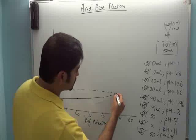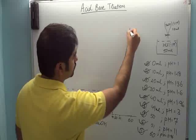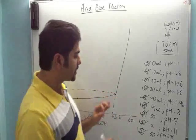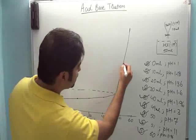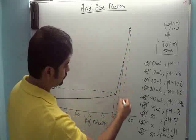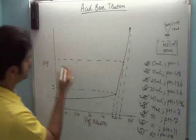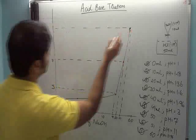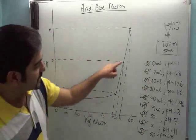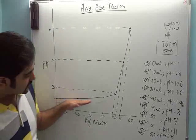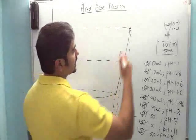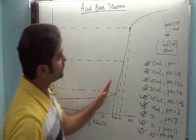Toh agar mein inko jod ke curve banao — yeh ek dam se badha. Thik hai, agar aap isko pencil ya pen leke bade dhyan se banao ge, toh it will look excellent. 49 pe pH 3 hai, 50 pe it becomes 7, and 51 pe it becomes 11. Aur 11 ke baad, jab aap 60 dekho ge, toh pH is 11.96. Toh dhyan rakhne wali baat hai ki 50 se pehle curve slow slow increase kar raha tha. 49 ke baad 50 pe ek dam sharp increase hua. 50 ke baad 51 pe or sharp increase hua. 51 ke baad iska increase phir wapas se pehle jaisa slow ho jaata hai.